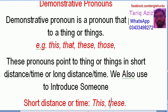آپ کو یہ definition اس طرح سمجھ میں نہیں آئے گی — we will look at examples and you will understand how we can point out things at long or short distance, in long or short time, or introduce someone. قریب کے لیے ہم this یا these کا استعمال کرتے ہیں۔